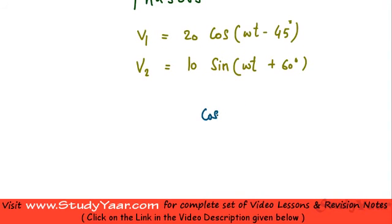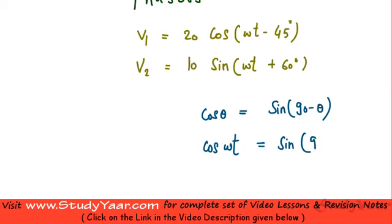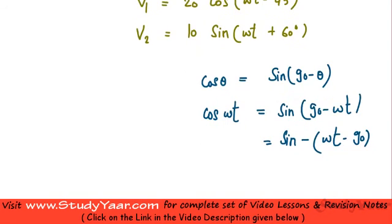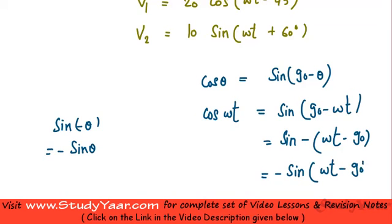Your cos(θ) is basically sin(90° - θ), right. Or in other words, your cos(ωt) is equal to sin(90° - ωt). Now, sin(90° - ωt) can be written as sin(-(ωt - 90°)). Now we know sin(-θ) is equal to -sin(θ). So this is -sin(ωt - 90°). So your cosine term can always be converted into a sine term.